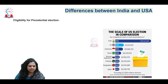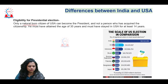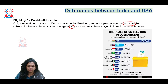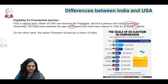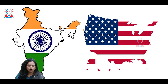Regarding eligibility to become president, in the United States only a natural-born citizen is eligible — someone who has acquired citizenship is not eligible. The other eligibility criteria are 35 years of age and residing in the US for at least 14 years. In India, the president should be a citizen of India, but the methodology of acquiring citizenship is not essential — it can either be natural or acquired.